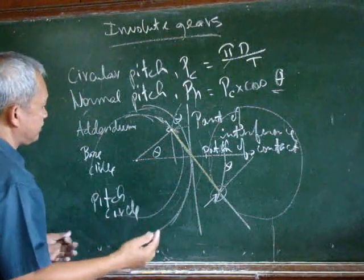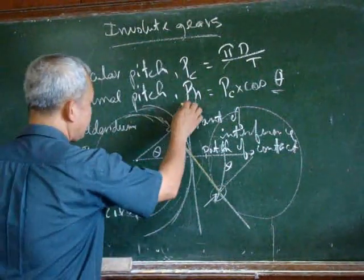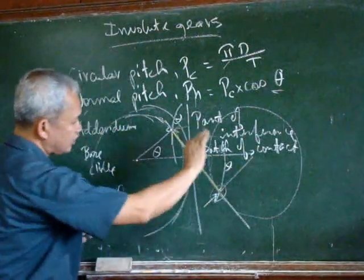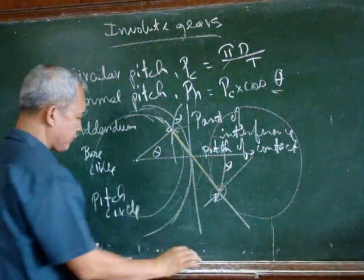And it is defined or it is determined by our addendum circle of one gear and another addendum circle of the other gear. So we cannot proceed with the other discussion.